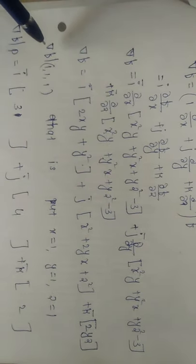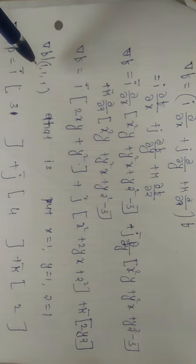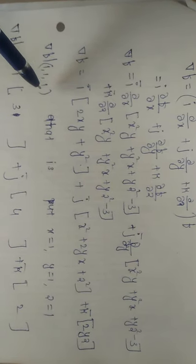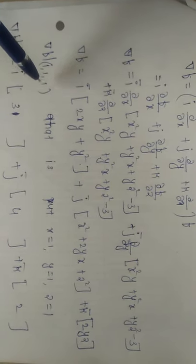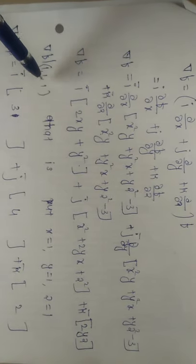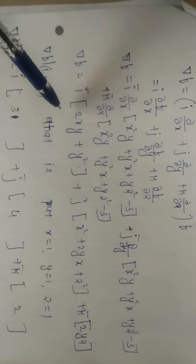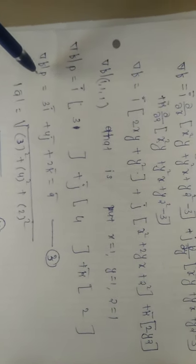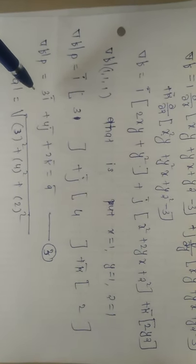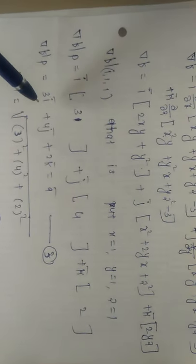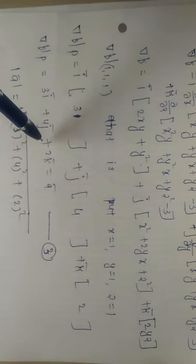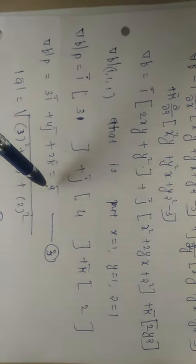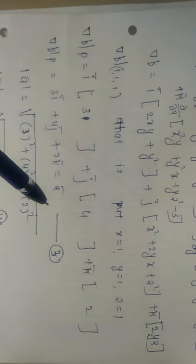We require ∇f at point P = (1,1,1), meaning x=1, y=1, z=1. Substituting into the equation, you will get ∇f at point P = 3i + 4j + 2k, and this is called ā.